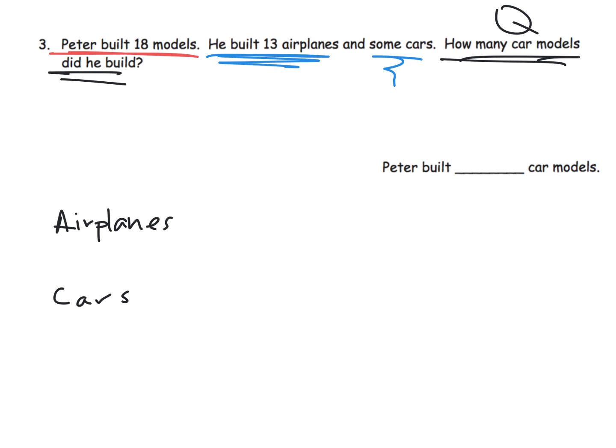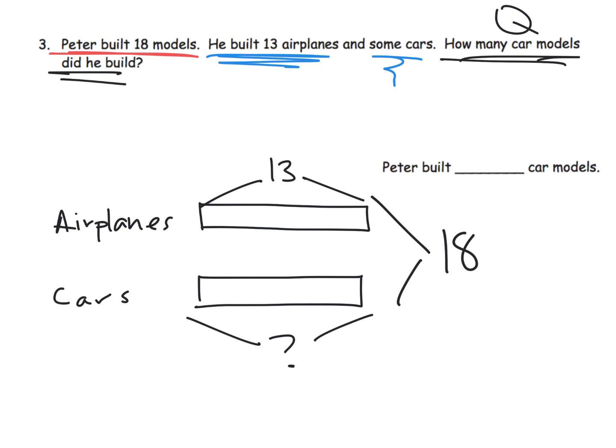And the idea is we're going to indicate that airplanes is some number and cars is some number. And the neat thing is it doesn't matter if these lengths are the same or if they're different or if they're accurate even. We just want to get them represented. Now we're going to go back. And so Peter built some airplanes. He built some cars. Now, do we know the number of airplanes? Yeah, he built 13 of them. So I'm going to write 13. Do we know how many cars? No, we don't. So we could do a question mark here. And then, but we do know the total. We know that the total is 18. So I can model it like this, 18.